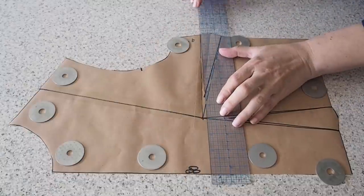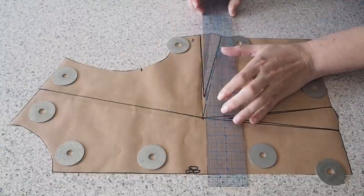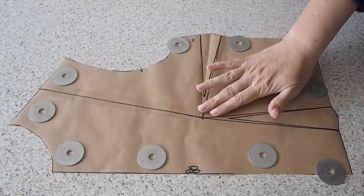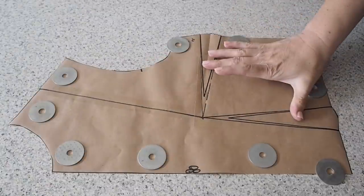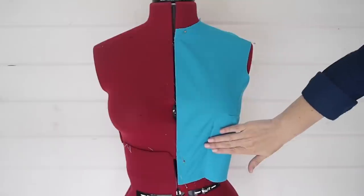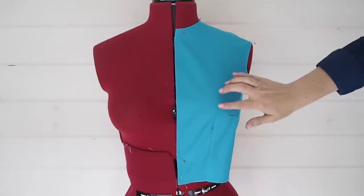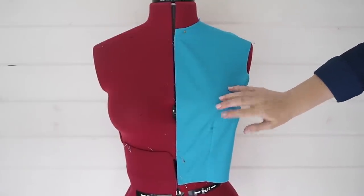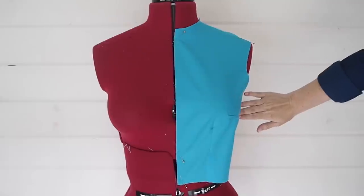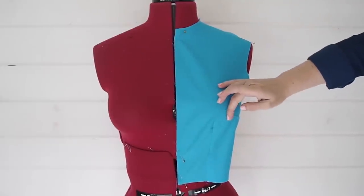And with that, this pattern is complete. So my shoulder dart has been moved to the side seam, my dart length has been reduced, and I've just sewn up one half of this pattern so that you can see what it looks like on the mannequin. So I have my two darts, one at the waist, one now at the side seam.